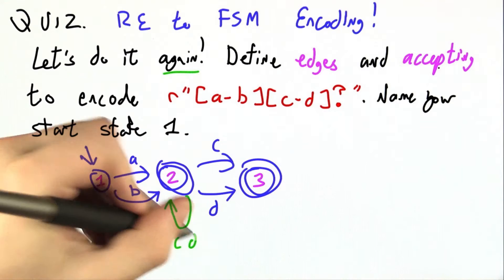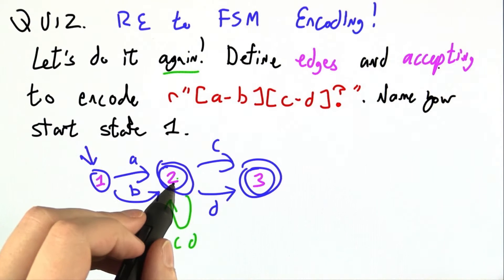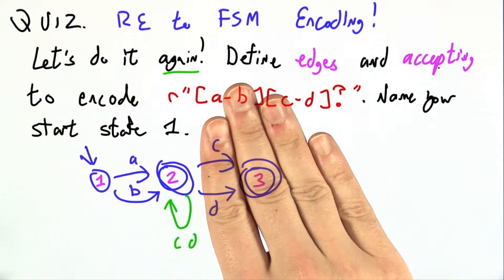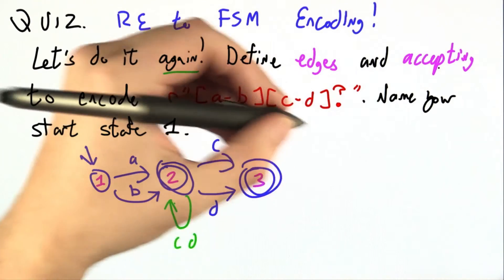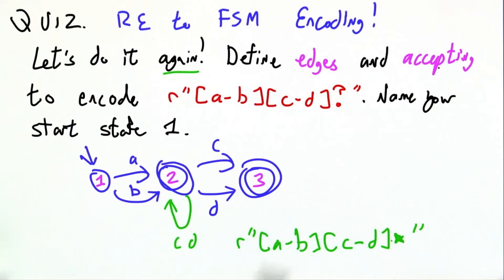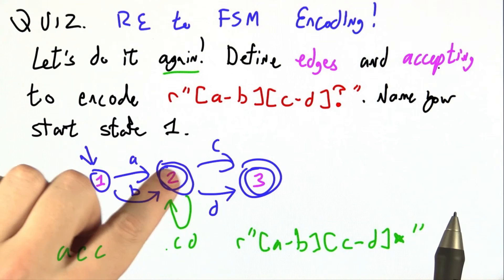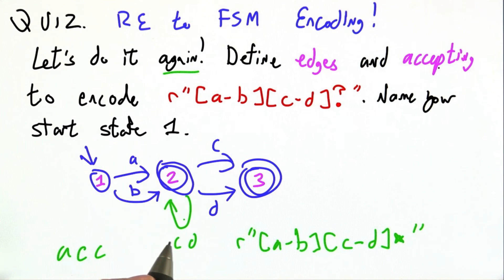Now, you might have been tempted to have a CD self-loop back to 2 instead of this right-hand side of the finite state machine. However, this self-loop changes the meaning to A or B, CD star. If you have the self-loop, A, C, C is accepted. A, C, C, and it shouldn't be.